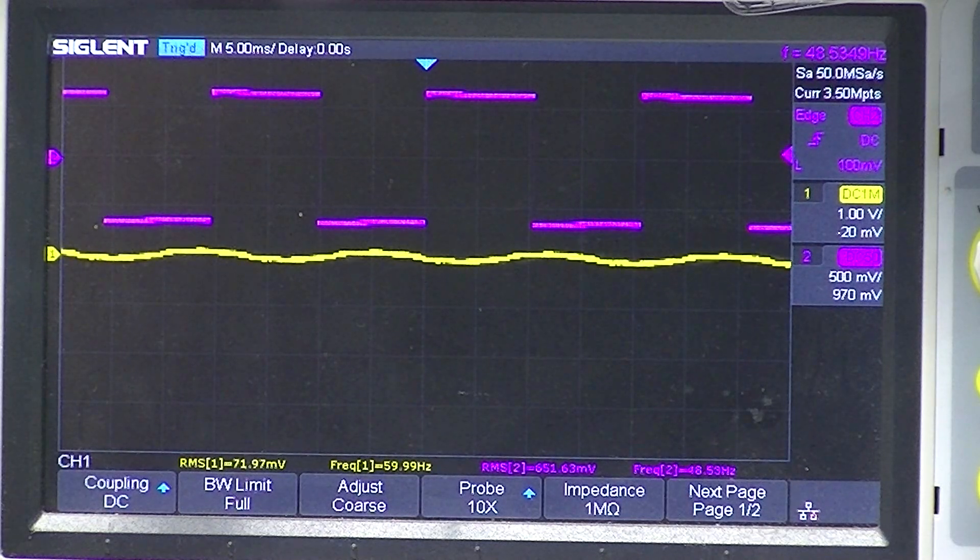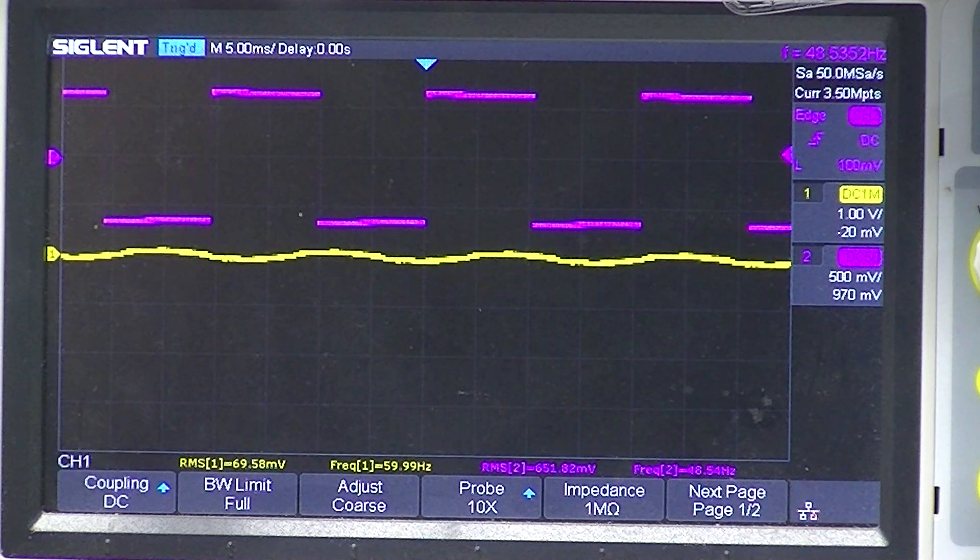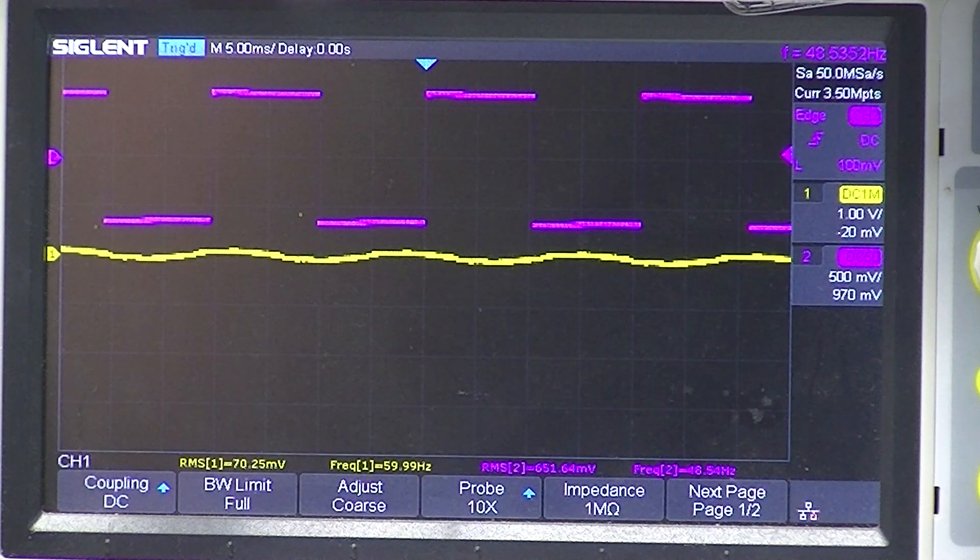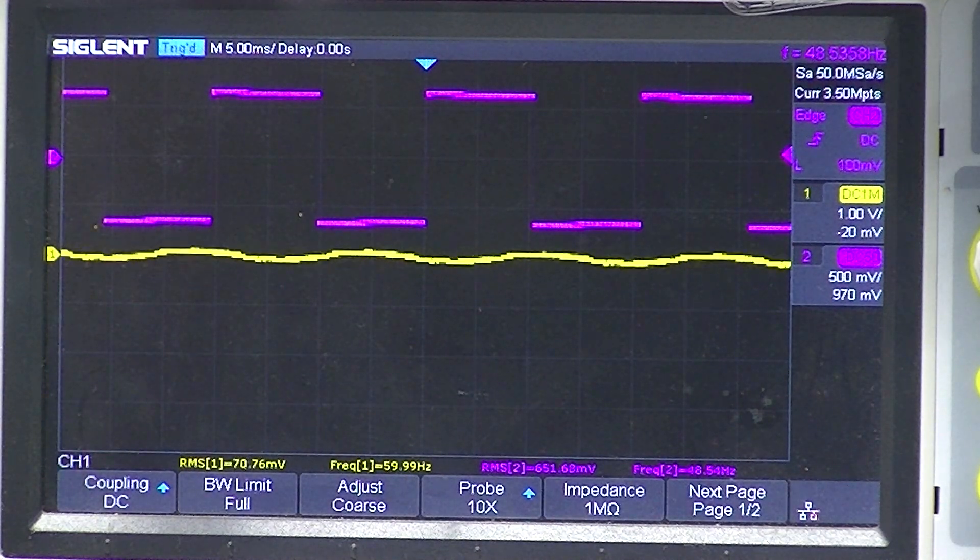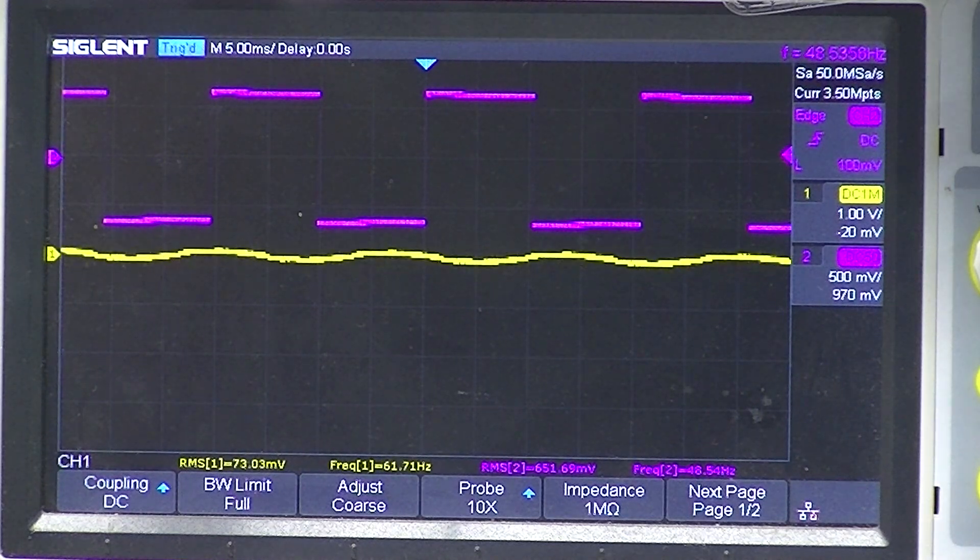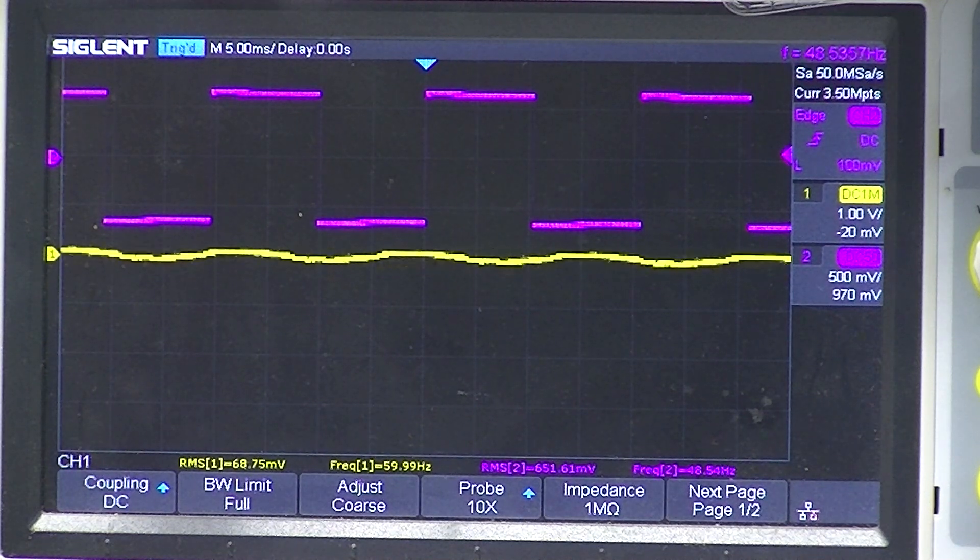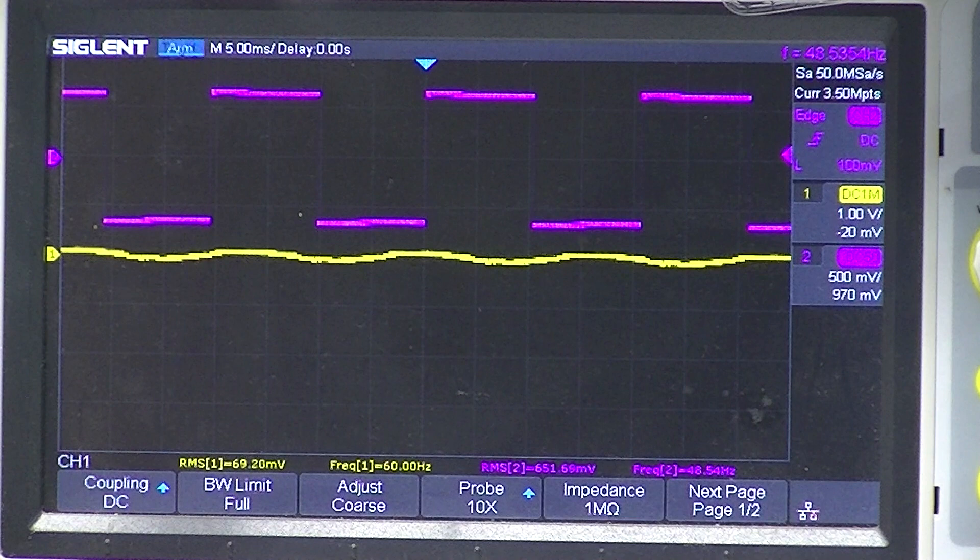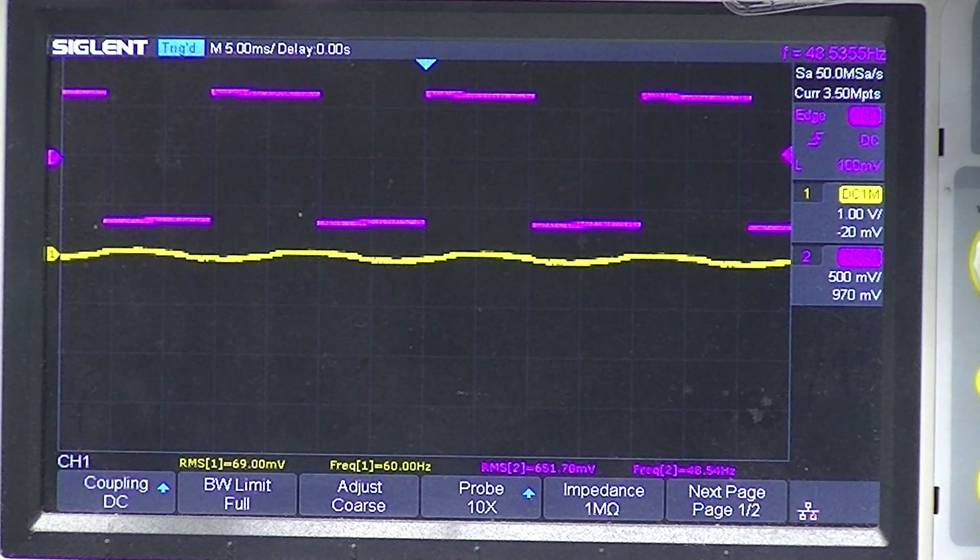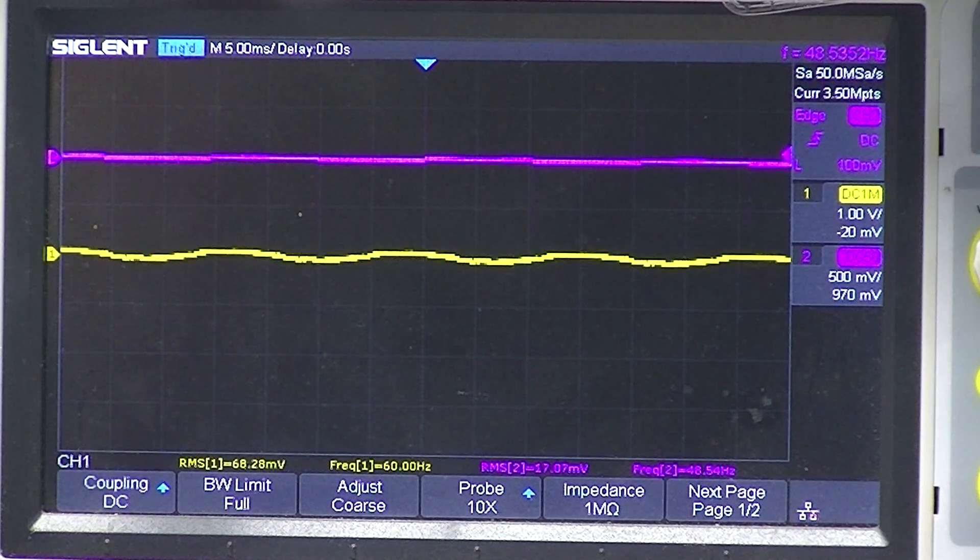The upper trace, the purple one, is the output from the signal generator. And right now it's set around 48 hertz and 0.66 milli, close to 0.6 RMS on the input will be hooked up to the input. But look what happens when I hook it up. As soon as I hook it to the amplifier, I lose everything.